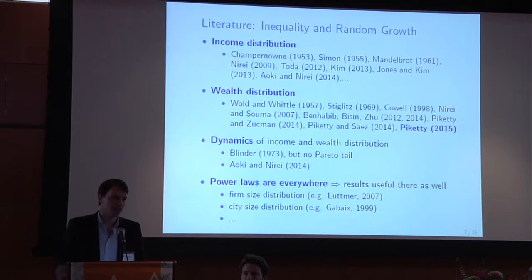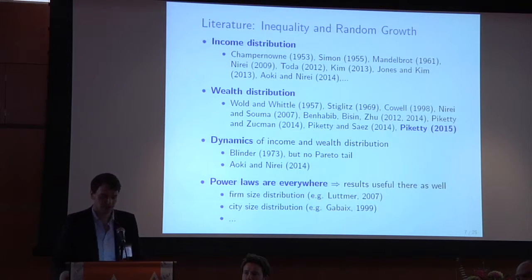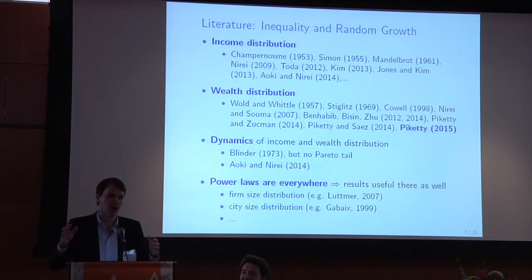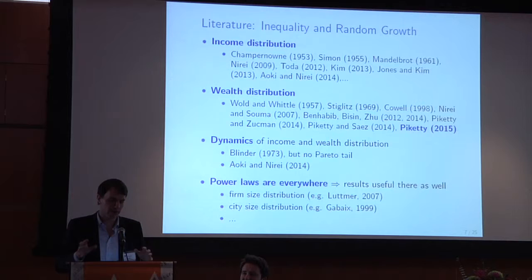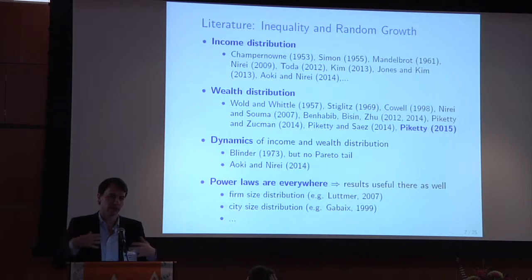There's a long list of papers going back to the 1950s where people use random growth theories to think about top inequality. Worth singling out is Piketty's paper at the AEA meetings in January, where he went out of his way to argue that random growth type models are the right way to think about the R minus G business. All of these papers study top inequality at a point in time — stationary distributions. What we bring to the table is a study of transition dynamics: the evolution of inequality rather than inequality at a point in time.